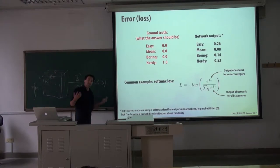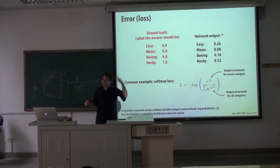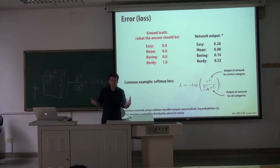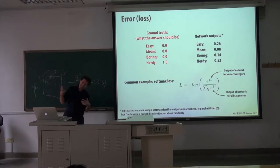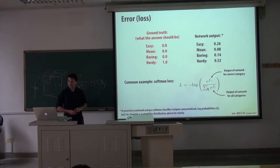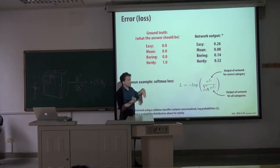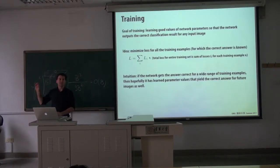The softmax loss is doing something very intuitive: if you stand up and say this is definitely the answer and you're wrong, you get hit really hard — the loss is high. We're penalizing really confident wrong answers because that's the worst case scenario. We'd rather be 50-50 than be completely confident and wrong. During training, I give a whole bunch of examples, the network outputs its answer, I compute the loss for all examples and add them up. If Li is the loss for image i, L is just the sum of all those losses.